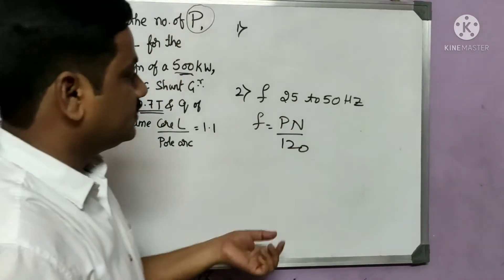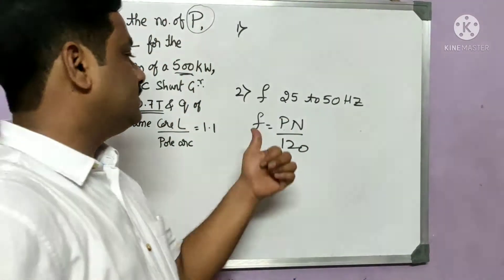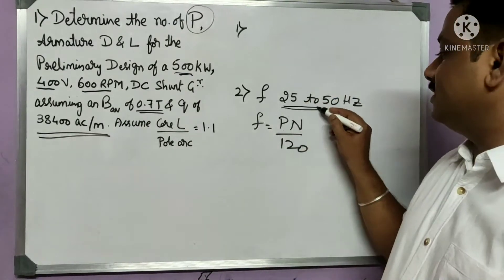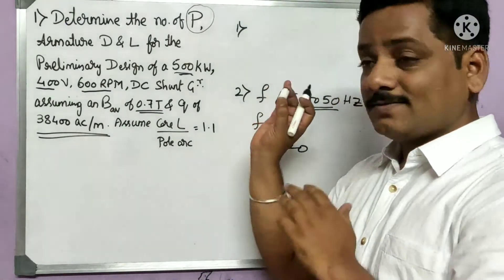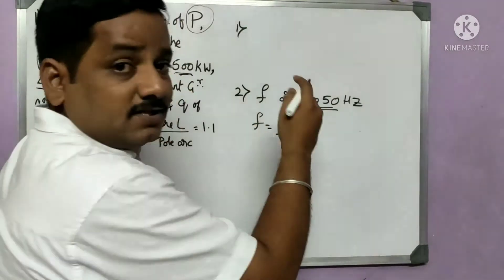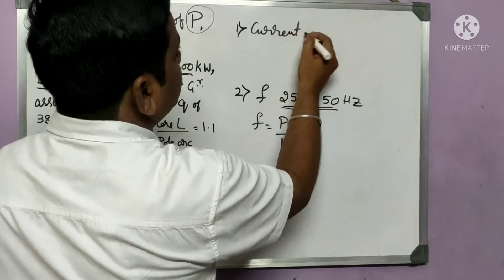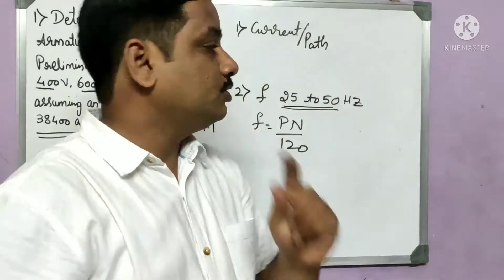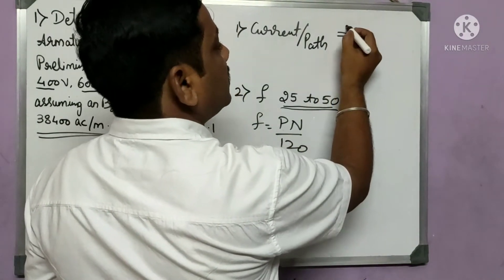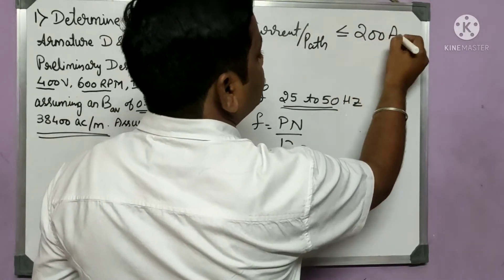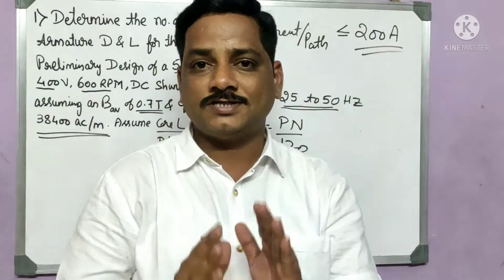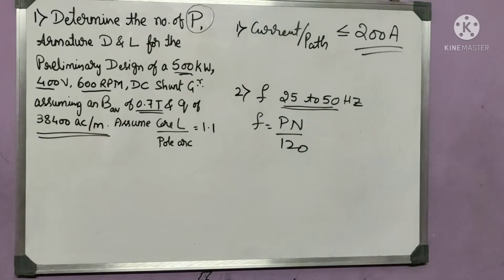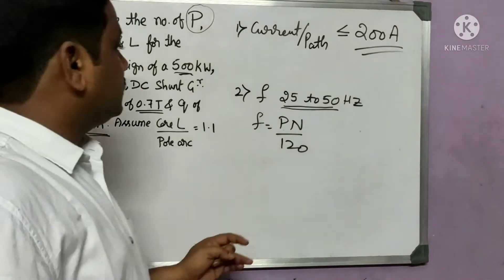Select the number of poles such that frequency lies within the range of 25 to 50 Hz. The first and most important point is the current per parallel path. In the armature there will be parallel paths, and the current per parallel path should be less than or equal to 200 amperes. Using these two restrictions we can find the number of poles.